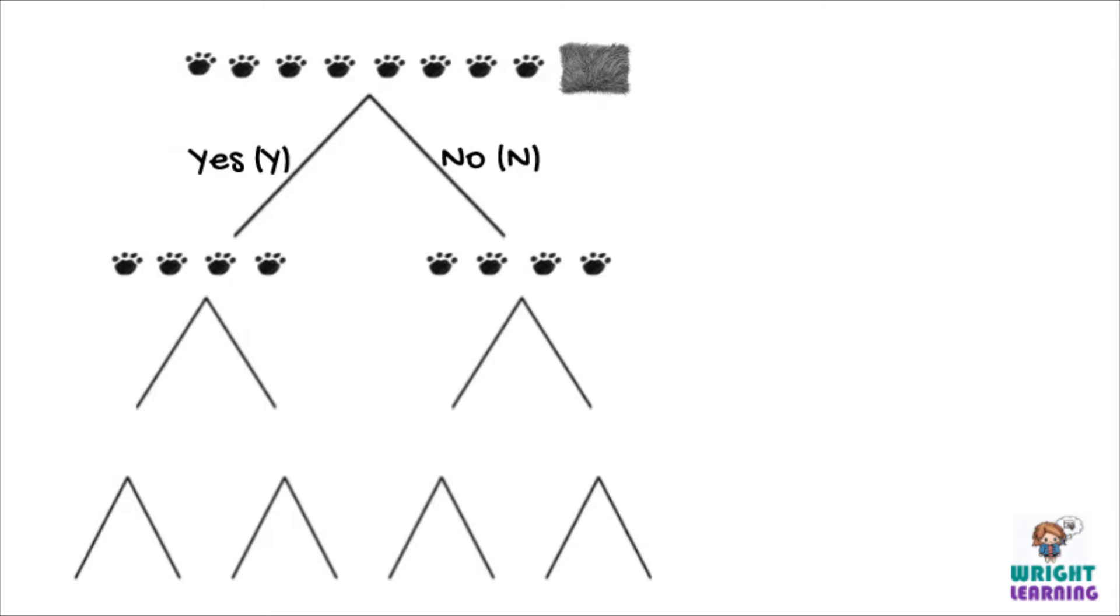Your next step is to further split each of these two new groups. Focus on them one at a time though. Within your first new group, you may realize that some lay eggs and some do not, so you can separate them further based on this feature.